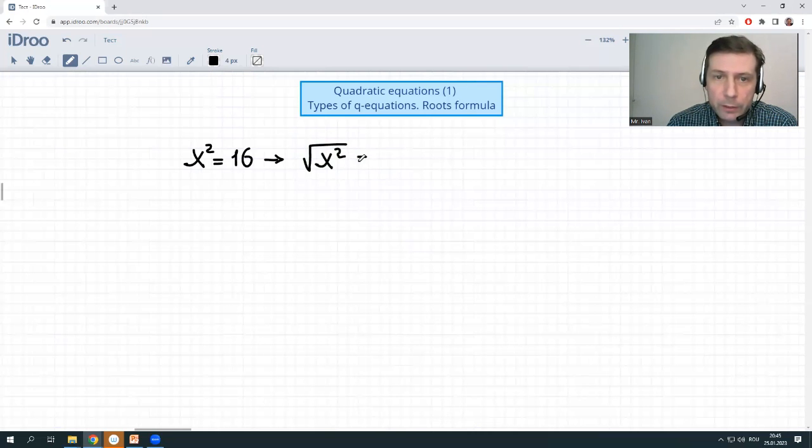So root of x squared is equal to root of 16. To make it safe, we should remember that square root of x squared is not x. Square root of x squared is absolute value of x. If you do remember this, you are safe. So root of x is equal to 4, which brings us to the conclusion that x is equal to plus or minus 4, positive or negative.